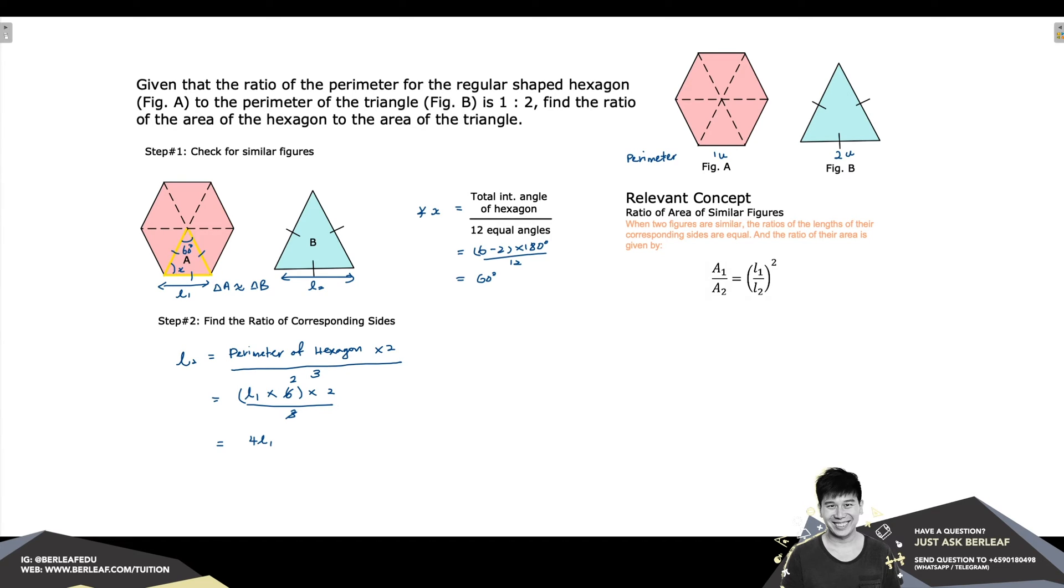Therefore, we can express L₁ over L₂ to be L₁ over 4L₁, which gives us, on simplifying, 1 quarter.